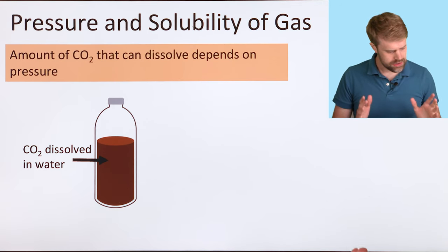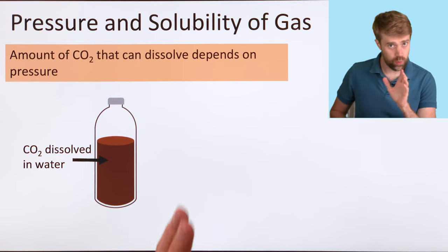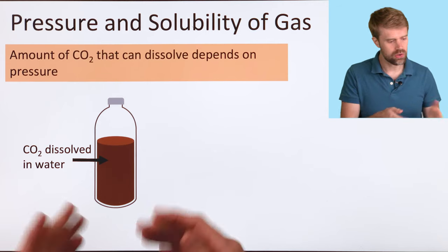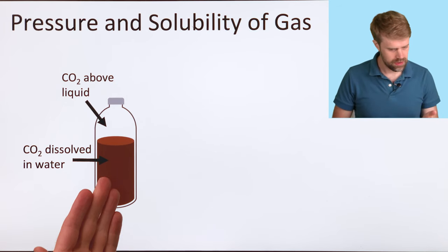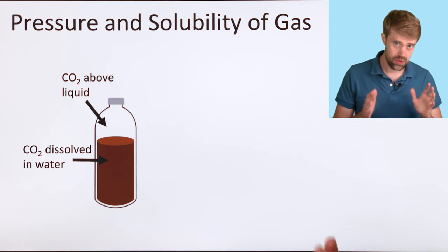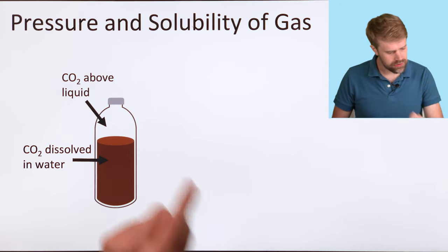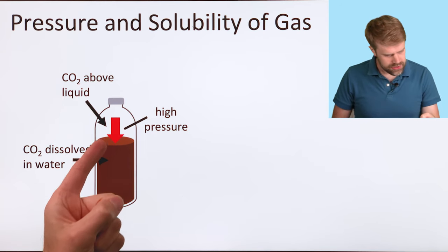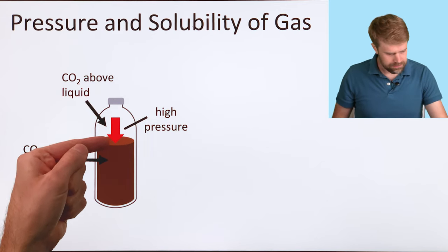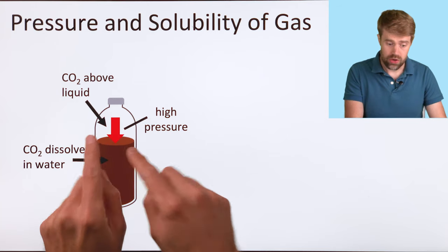You can see how gas solubility changes with pressure whenever you open a bottle of soda. Let's watch this happen. We'll start off with a bottle closed. We have the water here with the carbon dioxide dissolved in it, but there's also carbon dioxide gas in this area above the liquid. That carbon dioxide gas presses down on the surface of the liquid, and that creates high pressure. This red arrow shows the pressure.